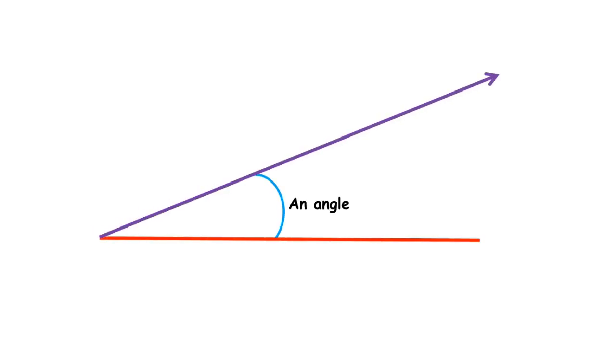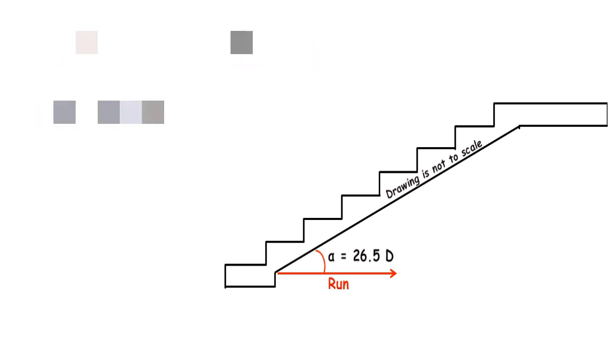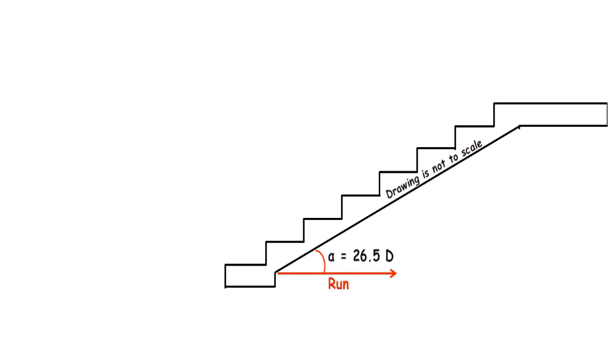Sometimes slope is described in terms of an angle, like 45 degree slope, 30 degree slope, 20 degree slope. What does this mean? Let's take an example. Suppose a staircase is making an angle of 26.5 degrees. This means the slope of the staircase is 6 inches over 12 inches, or 1 over 2, in rise over run notation. You can also say the rise and run of the stair steps are 6 inches and 12 inches.